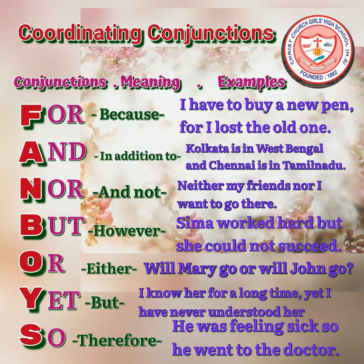Let's see how these coordinating conjunctions are actually applied in a sentence. We use the conjunction 'for,' meaning something like 'because,' to join two clauses when the second clause is the reason for the first clause. For example: 'I have to buy a new pen, for I lost the old one.' Here, a reason is given for buying a new pen using 'for' as the coordinating conjunction.